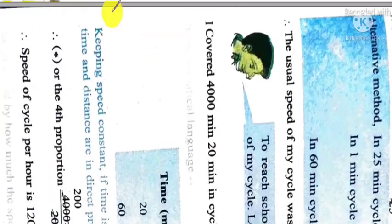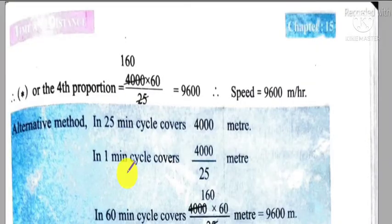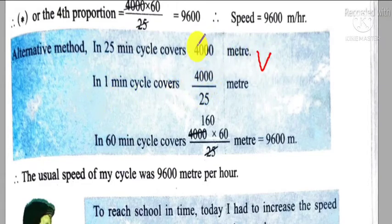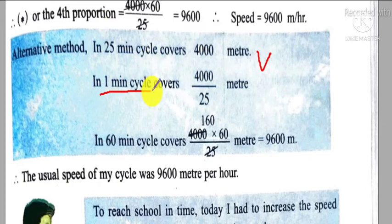Similarly, we can find out the value by unitary method like this. In 25 minutes, cycle covers 4000 meters. So in one minute, cycle covers 4000 by 25, as the time is very low. So distance covered by the cycle will be less than before. So it will be divided by 25, and in 60 minutes it will go more, so it will be multiplied. So 4000 into 60 by 25, after calculation we will get 9600 meters.